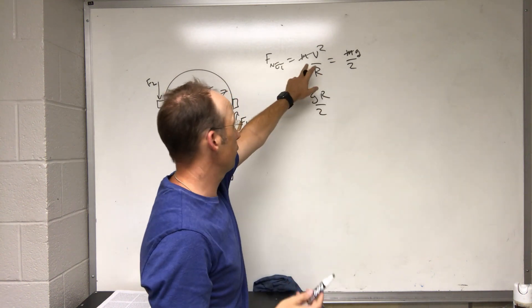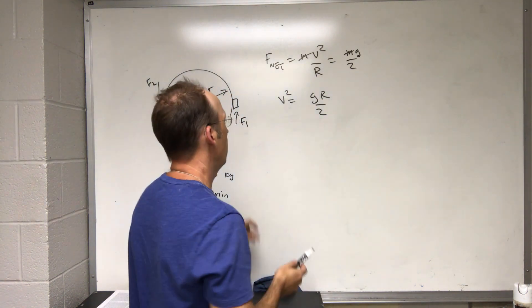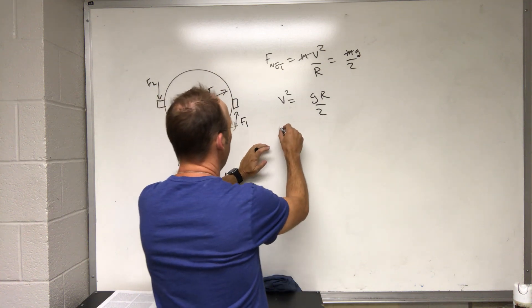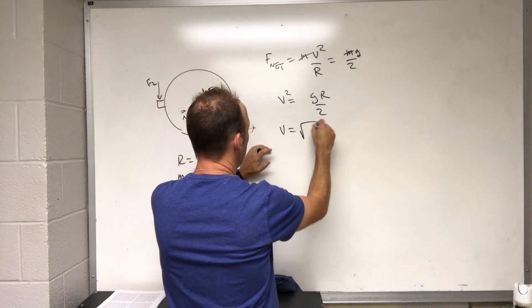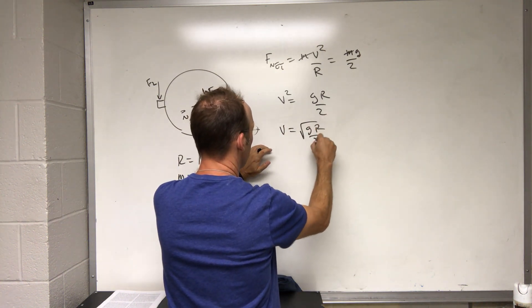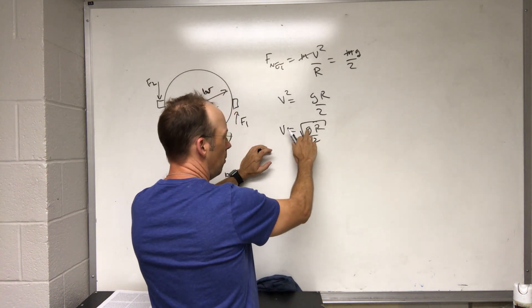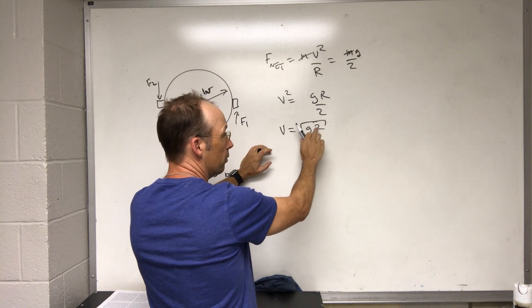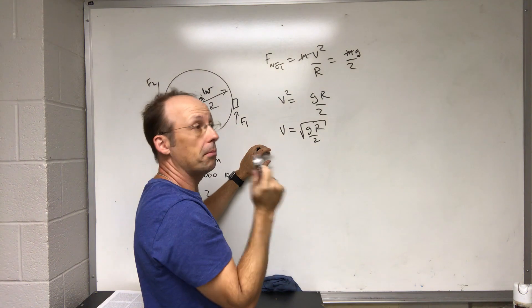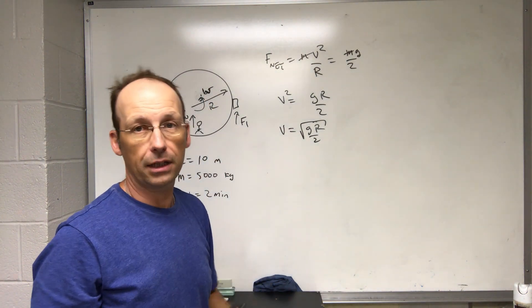There's only one force, just to be clear. So v equals the square root of g r over 2. Let's just check that. That's meters per second squared times meters divided by 2, so you get meters squared per second squared, you take the square root, you do get meters per second. So that's right.